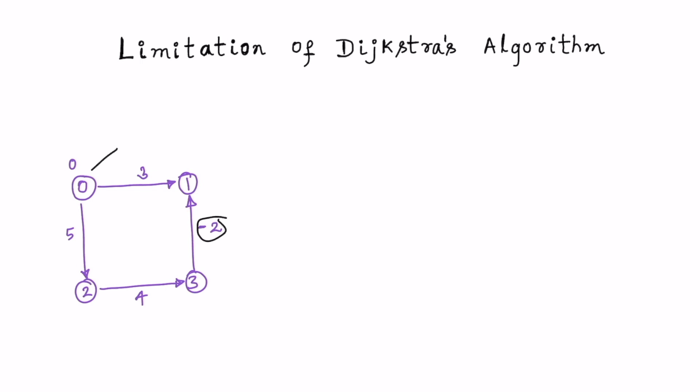Let's say our source node is node 0 and we are trying to find the shortest path from node 0 to all the other nodes. As per Dijkstra's algorithm, we set the distance to node 0 as 0 and distance to all other nodes as infinite.